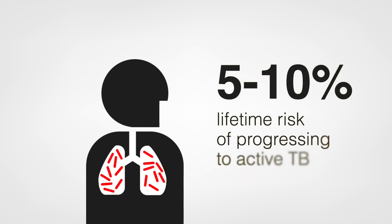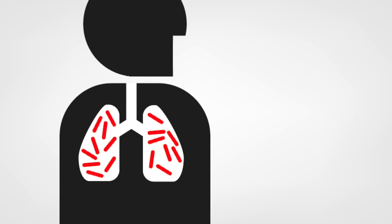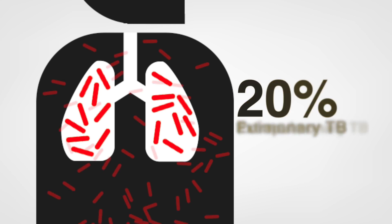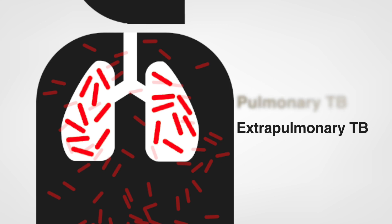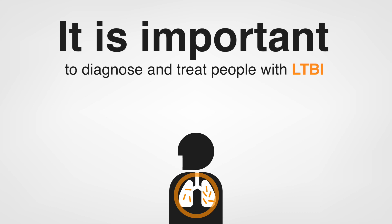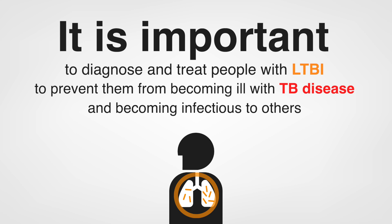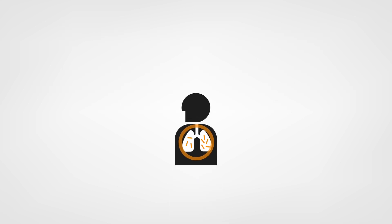People with LTBI have an estimated 5–10% lifetime risk of progressing to active TB. In the majority of people, reactivation TB occurs in the lungs, resulting in pulmonary TB. However, about 20% of cases are extra-pulmonary, with disease occurring in other sites. A person can have both pulmonary and extra-pulmonary TB. It is important to diagnose and treat people with LTBI to prevent them from becoming ill with TB disease and becoming infectious to others, thus helping to prevent transmission of the disease.